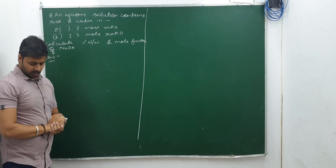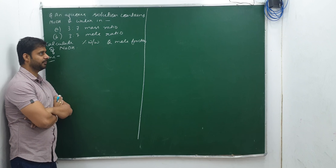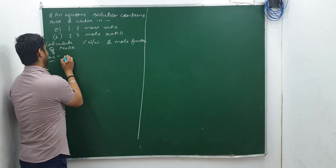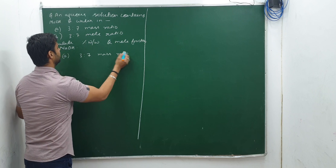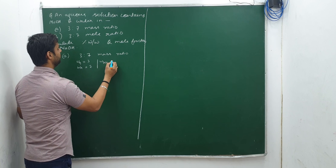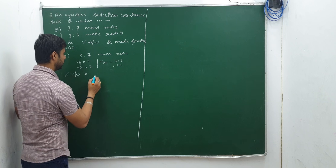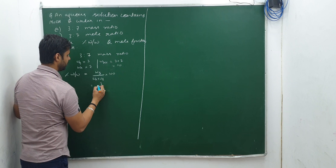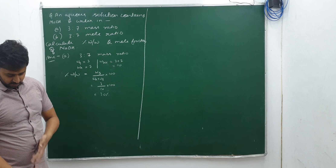Take a pause and try at your end, then I will discuss with you. First part — 3:7 is mass ratio. Mass ratio means W_B = 3 and W_A = 7, so W of solution = 10. Percentage w/w = W_B / (W_A + W_B) × 100 = 3/10 × 100 = 30%. So percentage w/w is 30 percent.